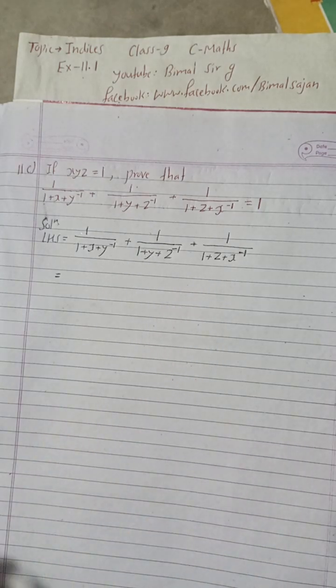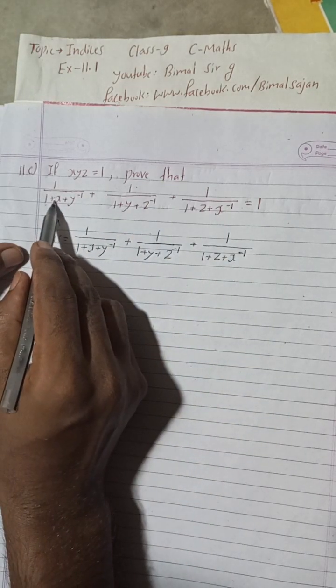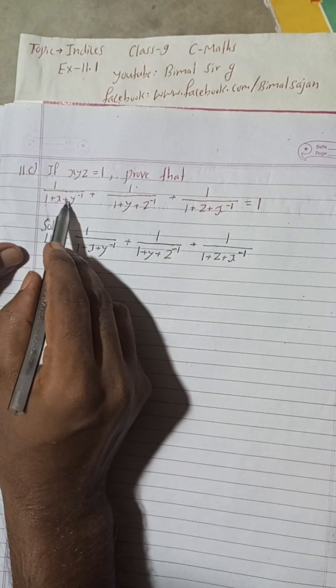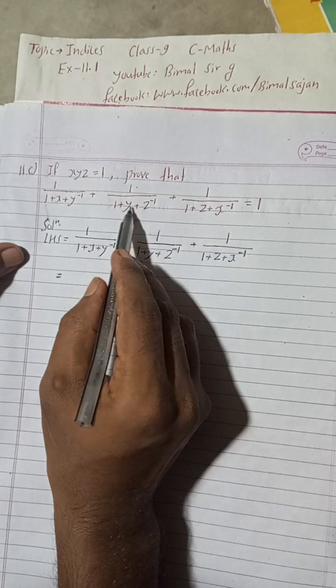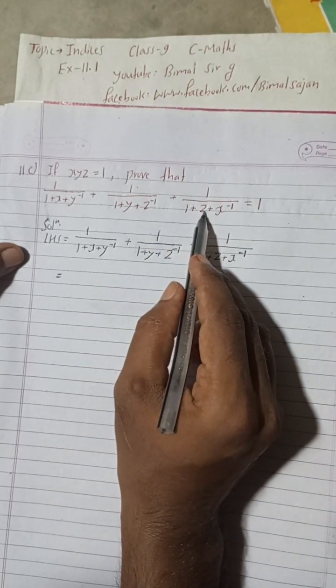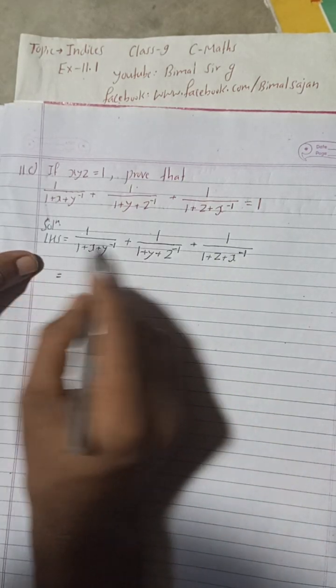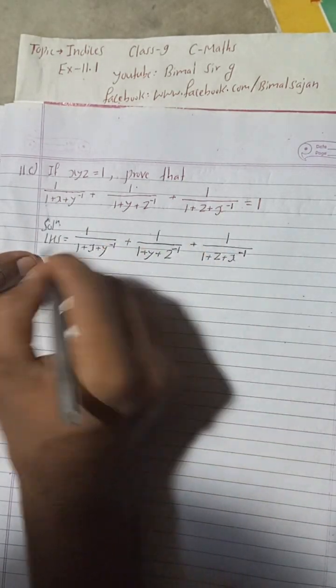So let's start the solution. If xyz = 1, prove that 1/(1+x+y^(-1)) + 1/(1+y+z^(-1)) + 1/(1+z+x^(-1)) = 1. We have to prove this, so I have taken LHS, this part. Now here is given x+y.